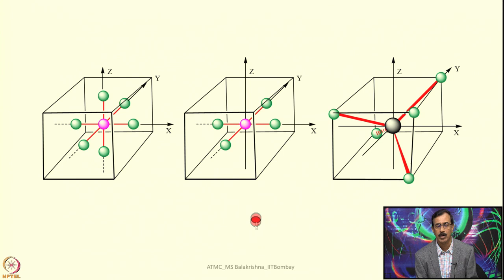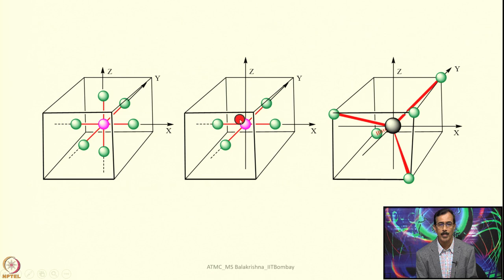Now let us consider a square planar complex. In this geometry, four ligands are approaching, and if you assume this molecule is placed with the principal axis being z, the four ligands approach the metal ion from the x, −x, y, and −y directions. Since no ligands are coming along the z direction, it is the least affected orbital. The rest is very similar to what we saw in the case of octahedral complexes.